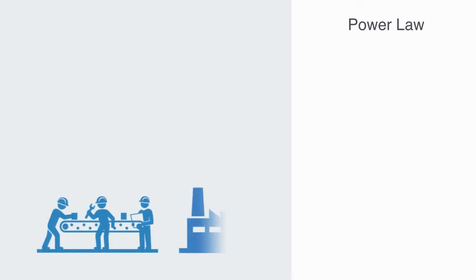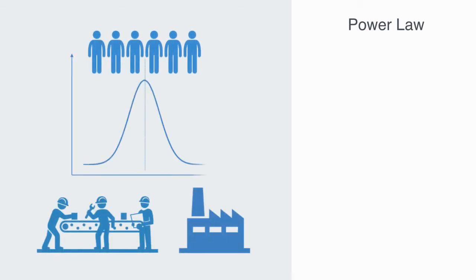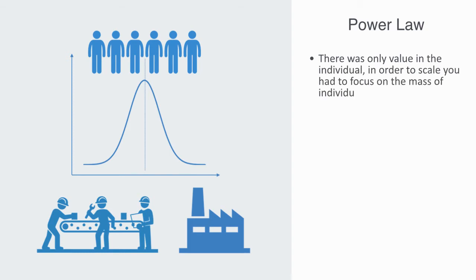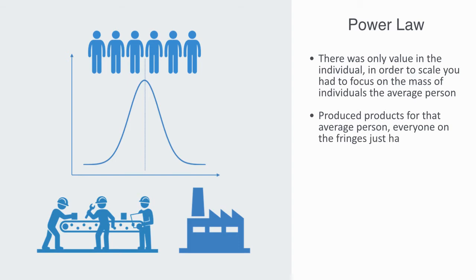One thing to note here is that within the industrial model of economics of scale, it's all about the mean average person. Because people weren't connected, there was no value in the network — there was only value in the individual. In order to scale, you had to focus on the mass of individuals, that is to say the normal average person. The geeks and outliers were of no interest. We produced products, services, and advertisements for the average people in the middle of the distribution. Everyone on the fringes just had to try and fit in. It was the dog that wagged the tail.